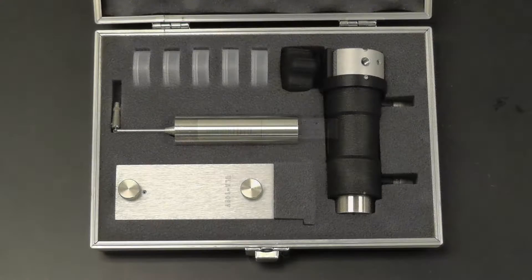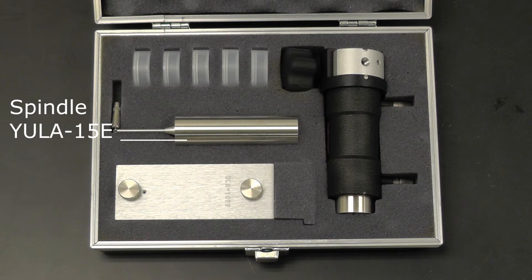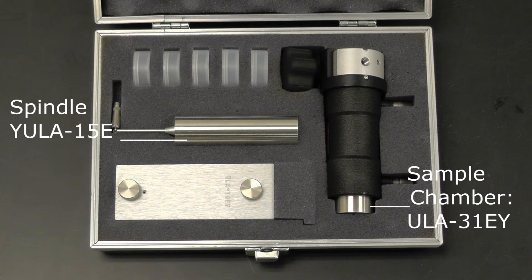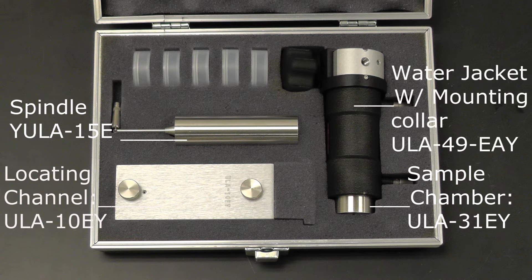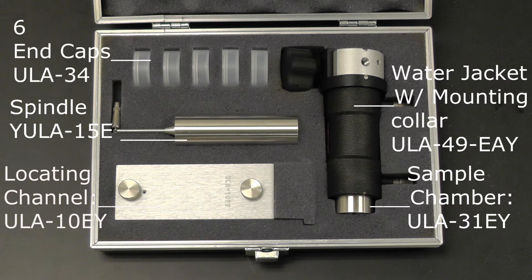The UL adapter consists of one large spindle, one sample chamber, a locating channel, a water jacket with mounting collar, and six end caps.